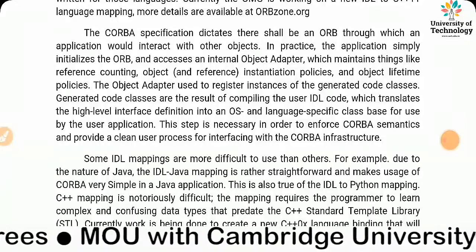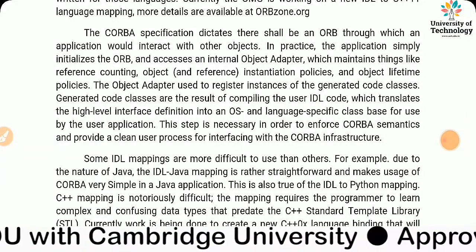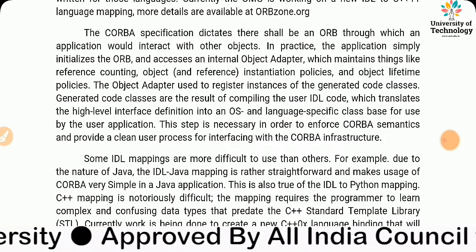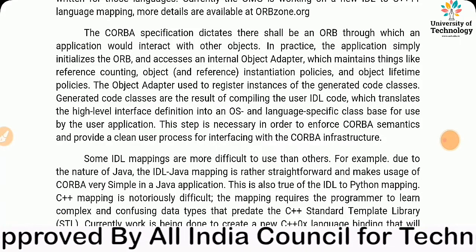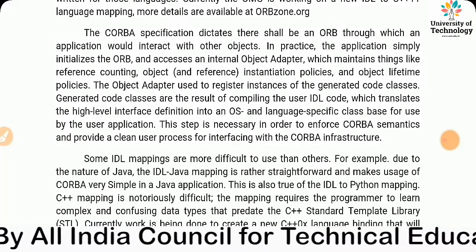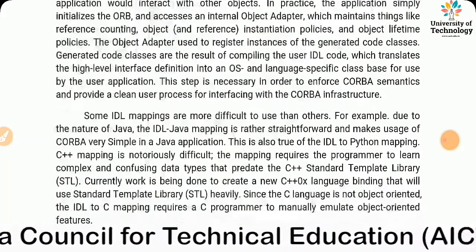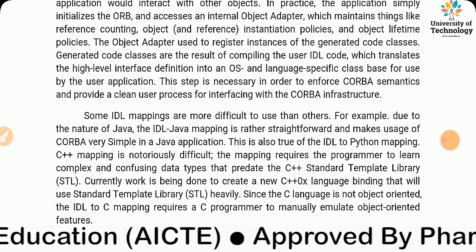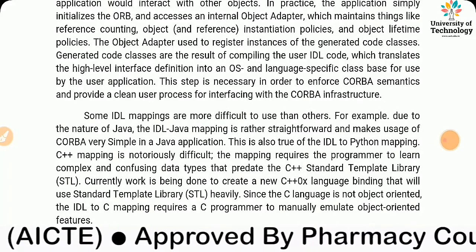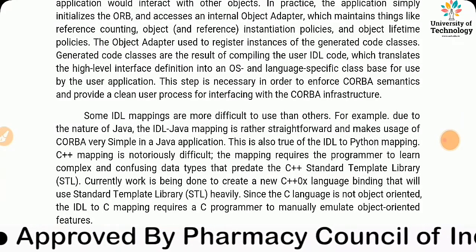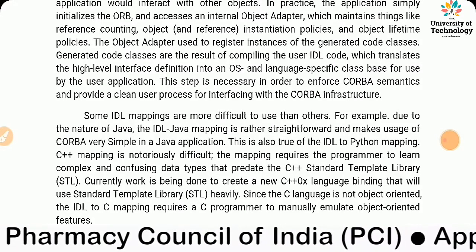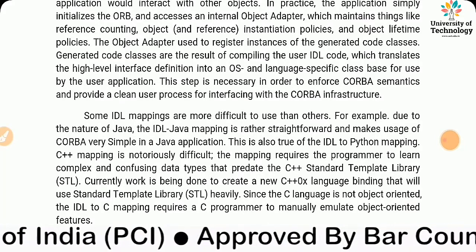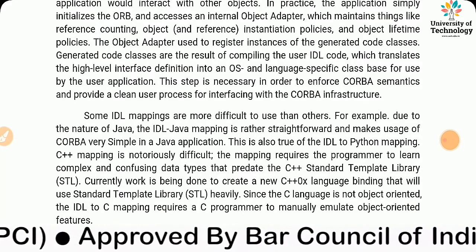Some IDL mappings are more difficult to use than others. For example, due to the nature of Java, the IDL-to-Java mapping is rather straightforward and makes use of CORBA very simple in a Java application. This is also true of the IDL-to-Python mapping. The C++ mapping, however, is difficult, requiring the programmer to learn complex and confusing data types.